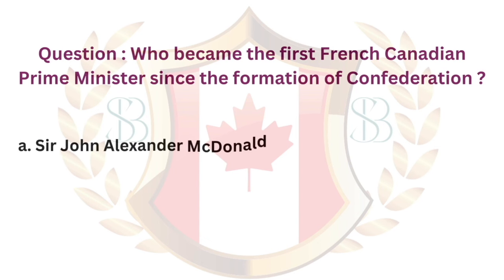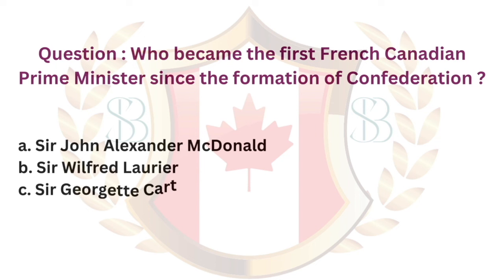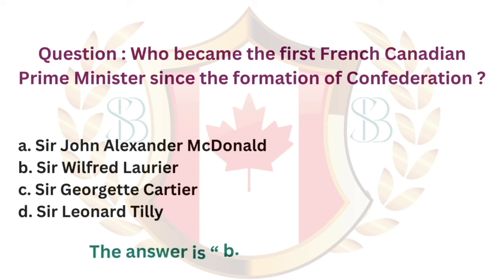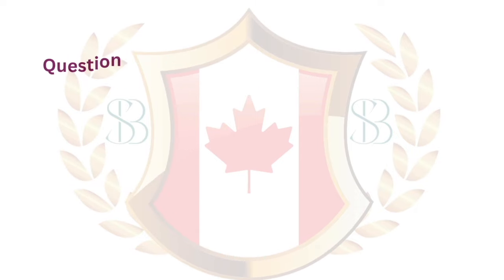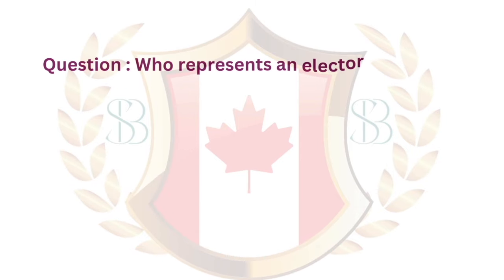Question. Who became the first French-Canadian prime minister since the formation of Confederation? a. Sir John Alexander MacDonald. b. Sir Wilfred Laurier. c. Sir Georgette Cartier. d. Sir Leonard Tilly. The answer is b. Sir Wilfred Laurier.